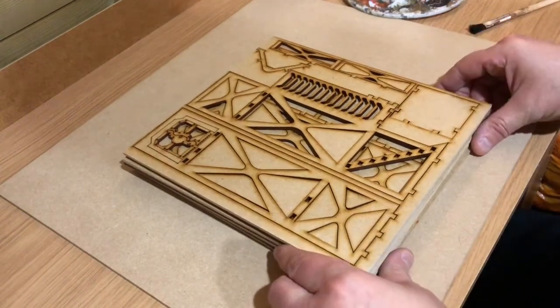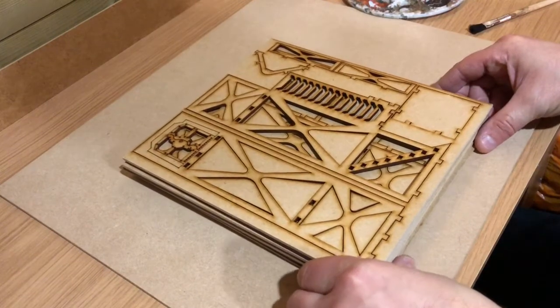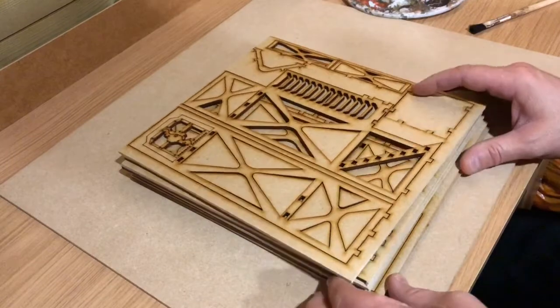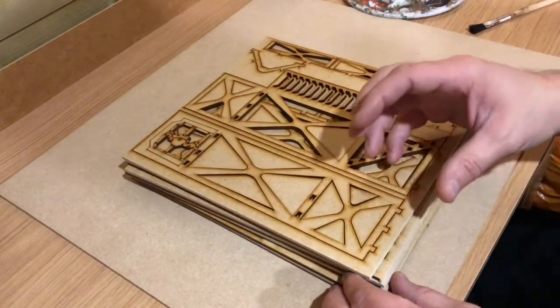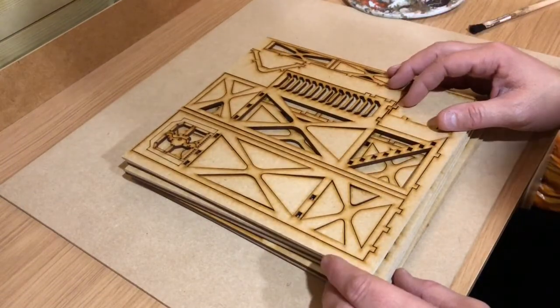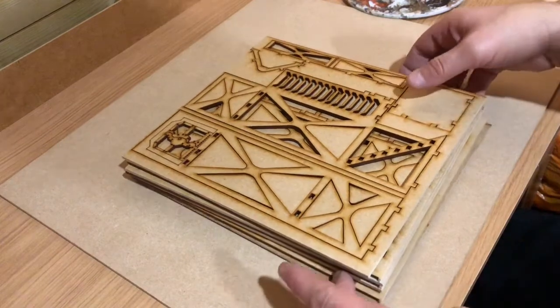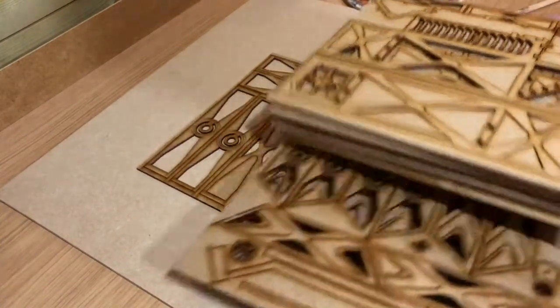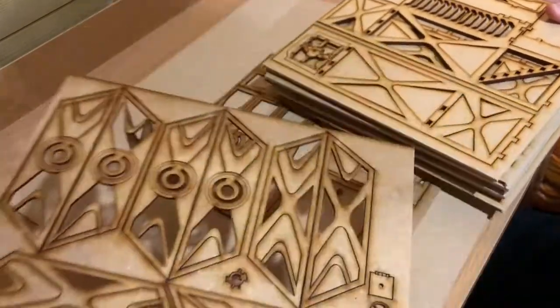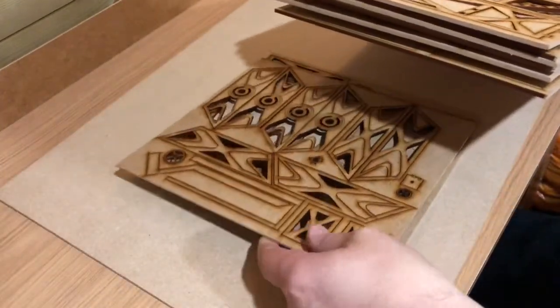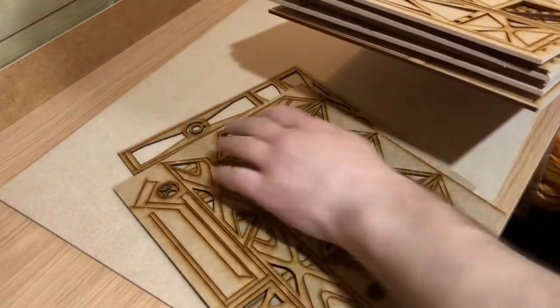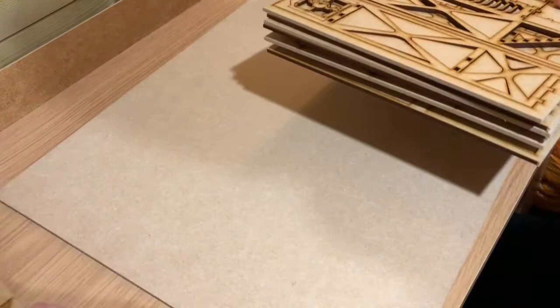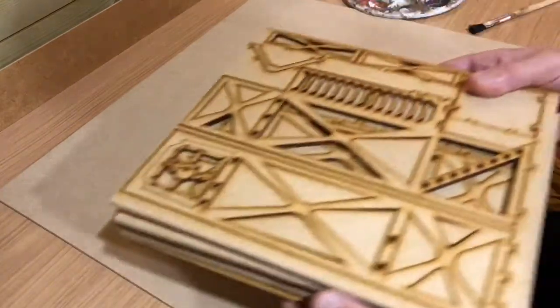The kit consists of two sizes of MDF. The 3mm, which is the thicker of the two, will be the core assembly of the actual tower. The 2mm sheets that you find here are for the detailing. So at this point, at the beginning of the video, find your 2mm detail skins and simply put them aside for now.